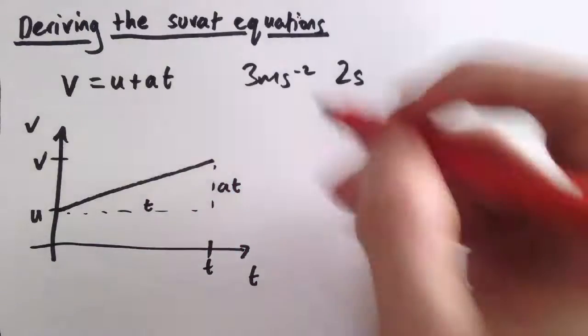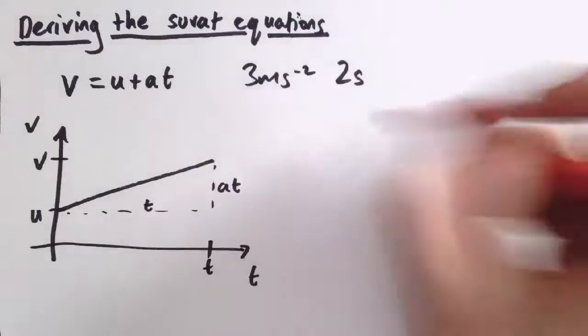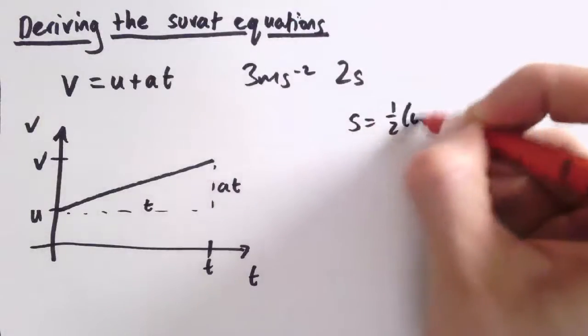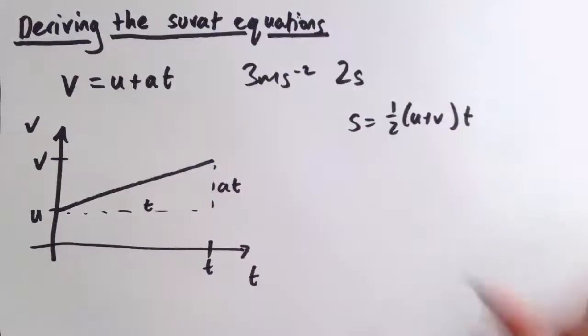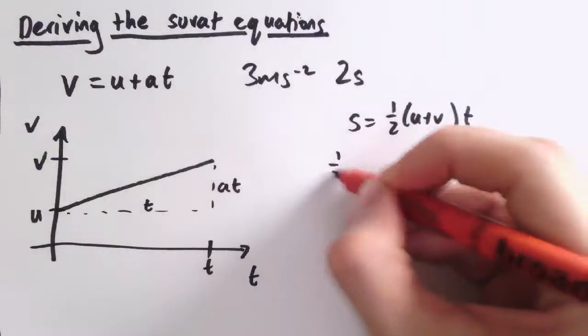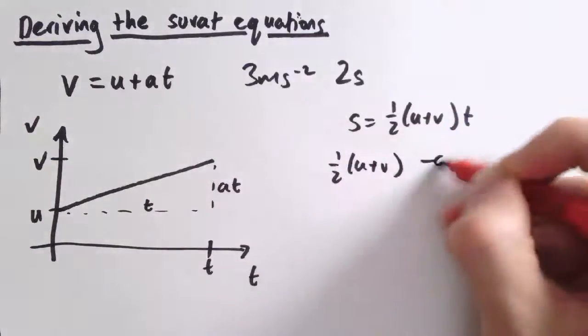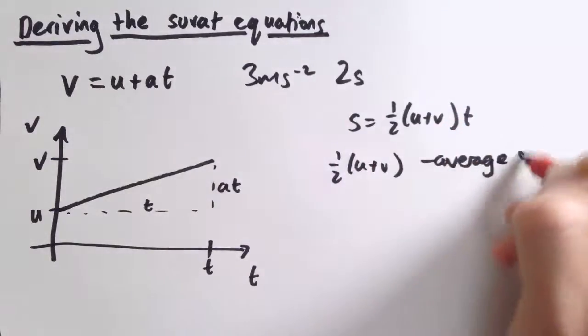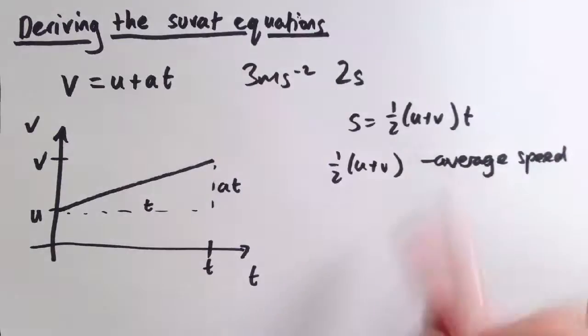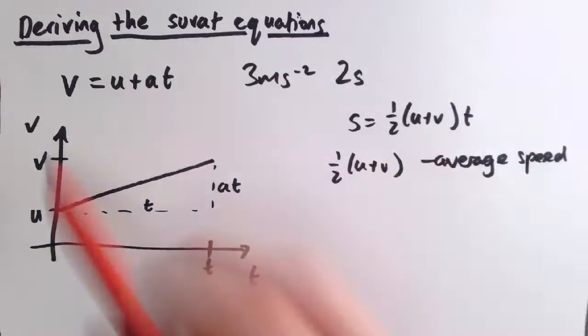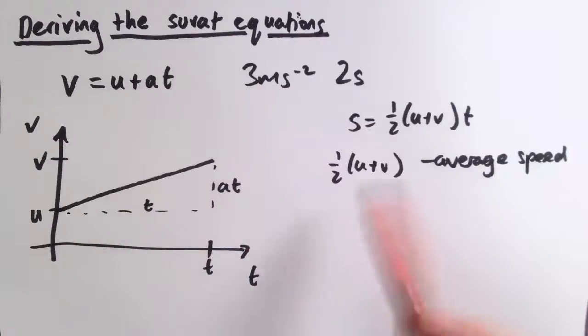The next easiest one to think about is s equals one-half u plus v times t. And one-half u plus v is the average speed, and it's just the average of the initial and the final velocities there. Going into constant acceleration, we can see that's the average speed.